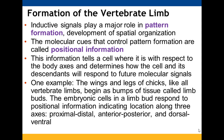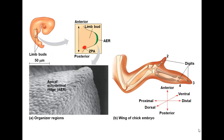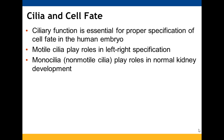Positional information tells a cell where it should be relative to the body axes and how cells respond to additional molecular signals. In chicks, wings and legs — like all vertebrate limbs — begin as limb buds, and embryonic cells in those limb buds respond to positional information telling them where to go along three axes: proximal-distal, anterior-posterior, and dorsal-ventral.